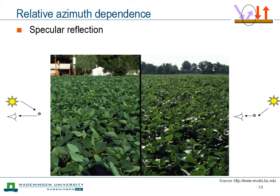Another effect related to the relative position of observer and Sun is specular reflection — the surface acts as a mirror. You know this well when looking at a sunset at the beach: with the Sun at a very low position over the horizon, there's a lot of specular reflection on the sea surface. Similar things happen over vegetated surfaces. When the Sun is in front of the observer, you can see specular reflection off the surface of leaves, giving quite different reflectivity compared to when the Sun is behind the observer.